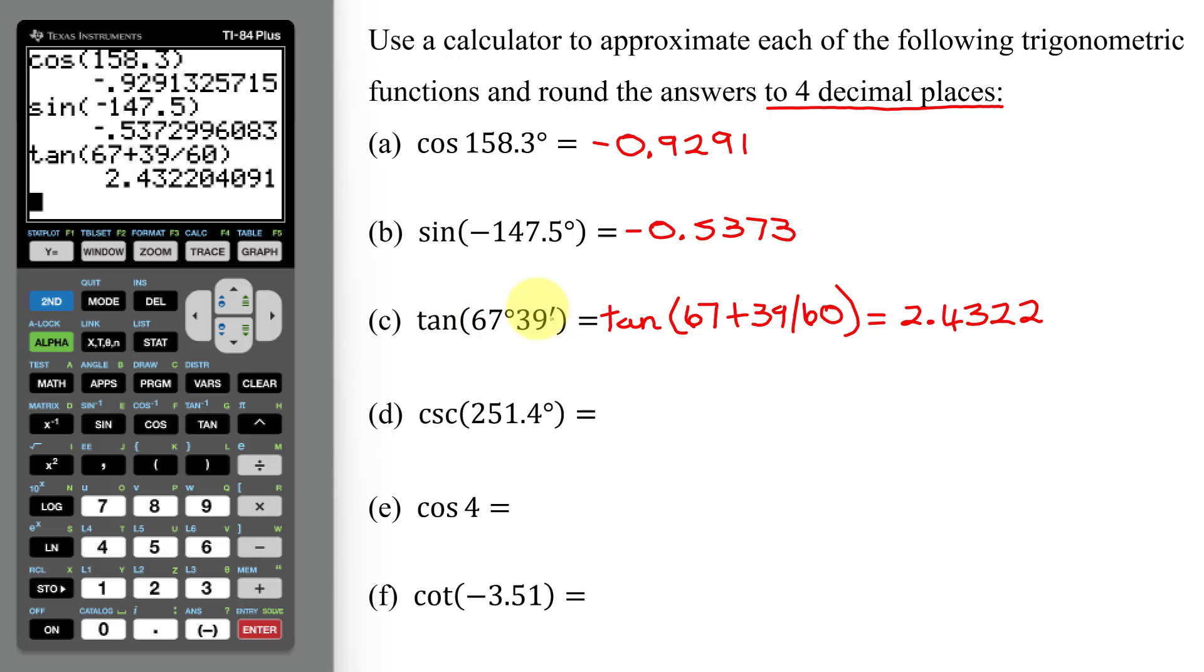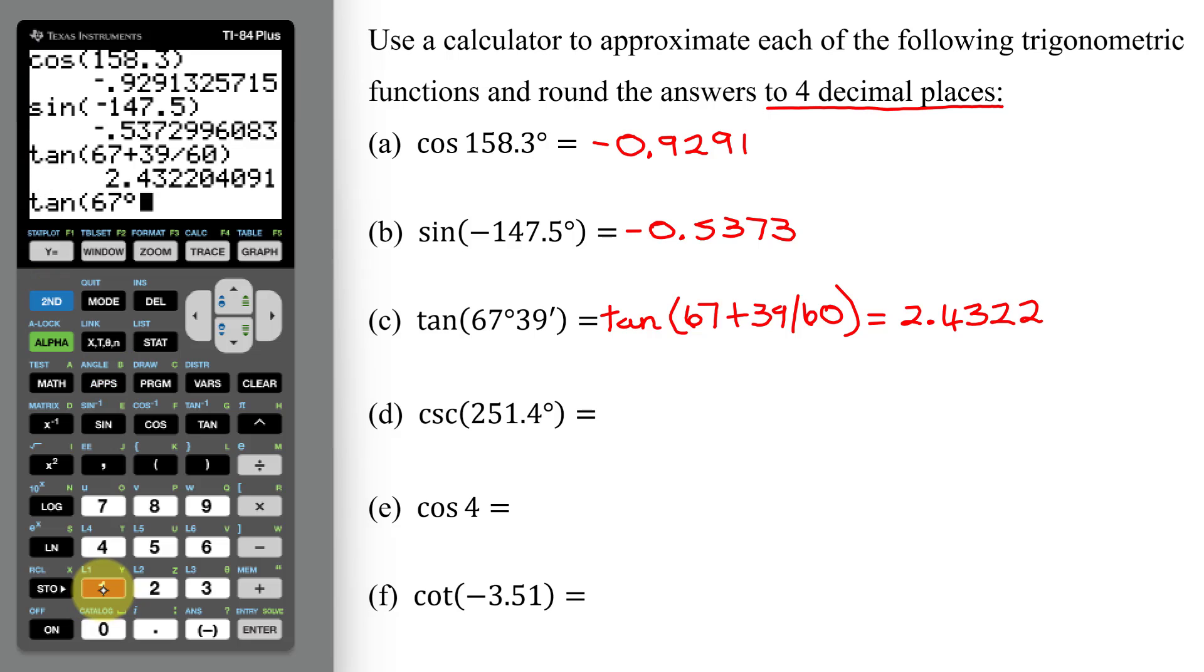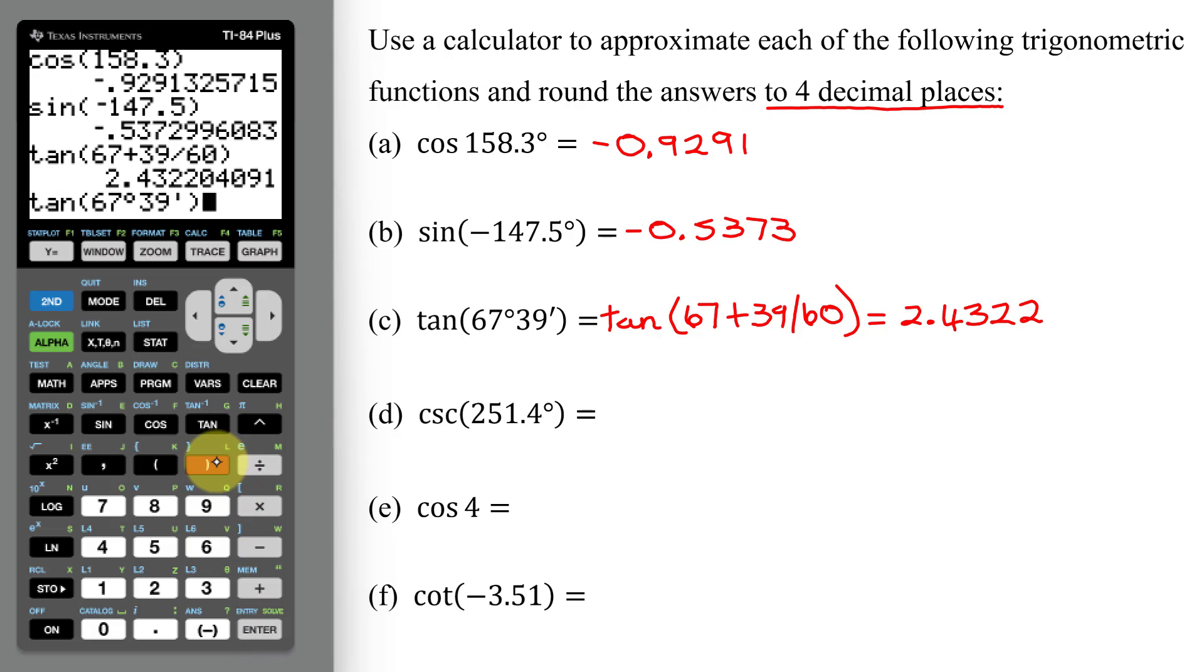Now the other way to do this problem is to write 67 degrees 39 minutes. So you have to do 67. Then you need to find the degree symbol. That's under angle, which is 2nd, apps. Degrees are number 1. So there's my 67 degrees. 39 minutes is in the same place, 2nd, apps. Scroll down to minutes, hit enter, close parenthesis, and hit enter. Did I get the exact same answer? Yes, but I find this method so much quicker than hunting for the degree and minute symbol on the calculator.